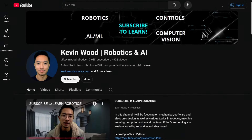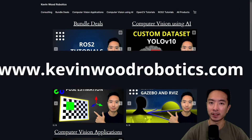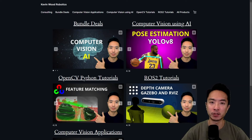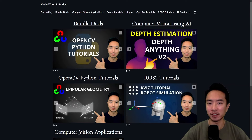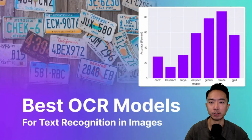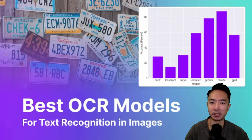If you're new to my channel, I have a website at kevinwoodrobotics.com where I have a bunch of resources on robotics and computer vision. So check it out and subscribe to learn more. We'll be diving into the different models for OCR and comparing the differences, but a lot of my data and charts I'll be using is from a blog post from Roboflow. If you want to read more about the research, you can go ahead and check out that post.